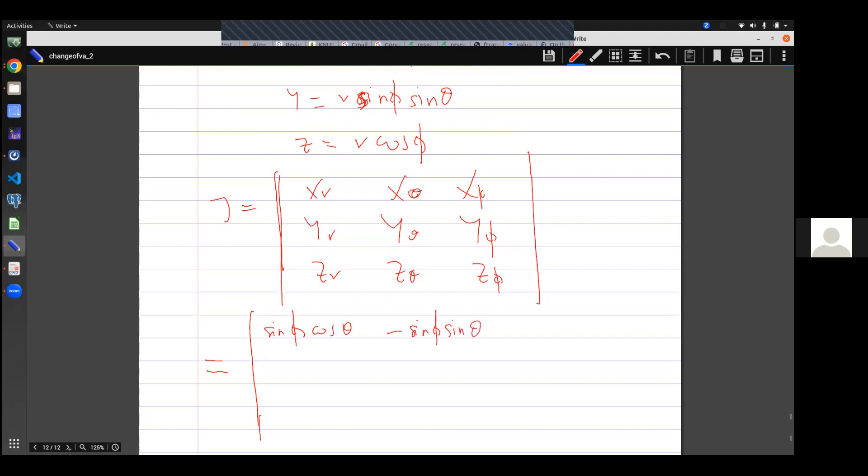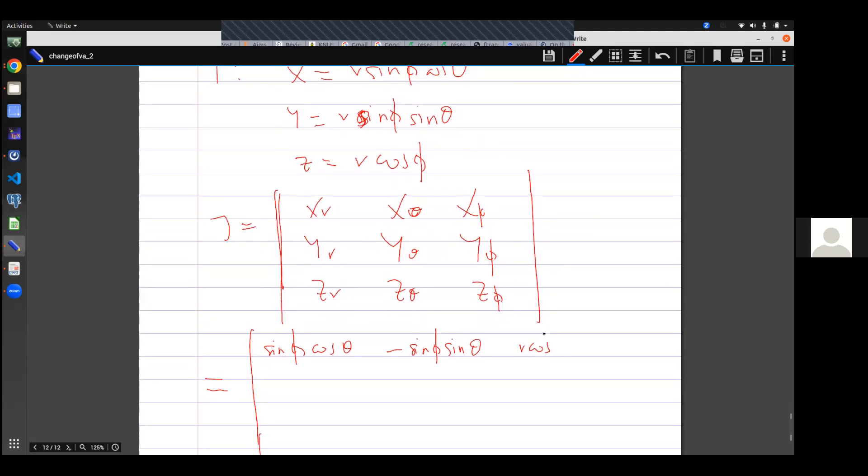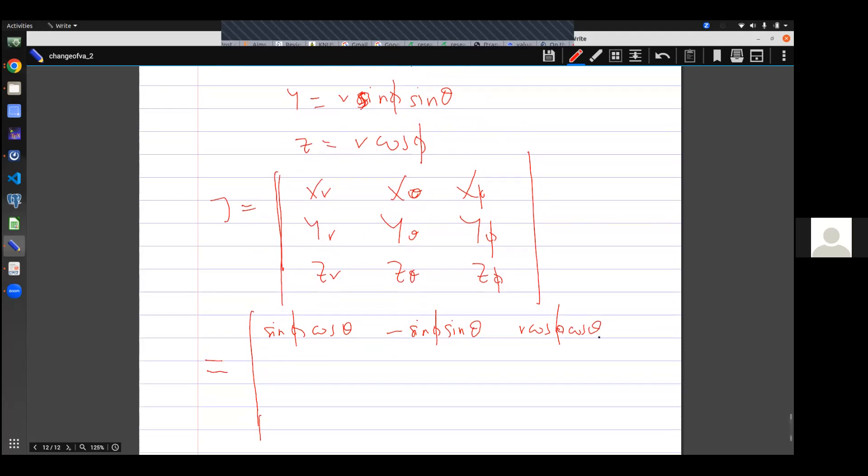And with respect to φ, I'll get r cos φ cos θ. Then I come to the second row. That is ∂y/∂r. I'll simply have sin φ sin θ.